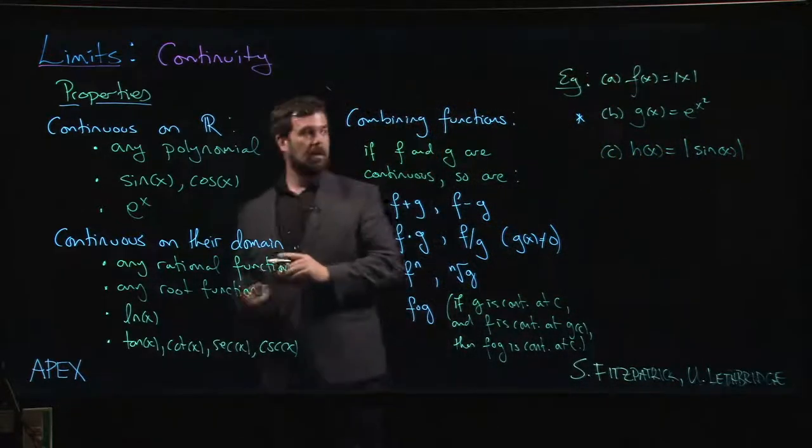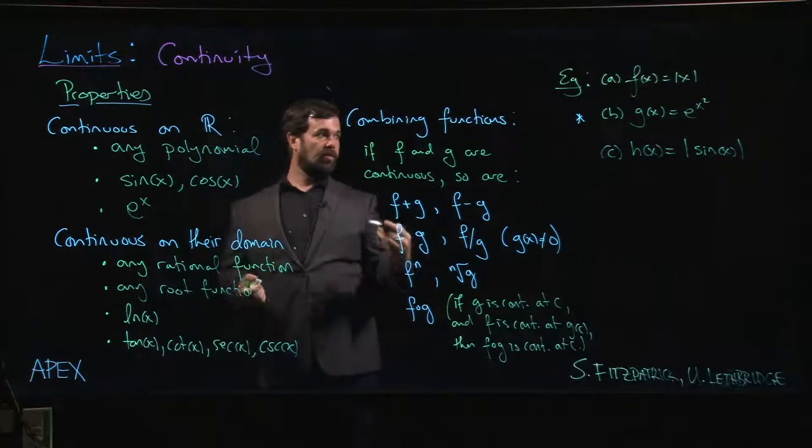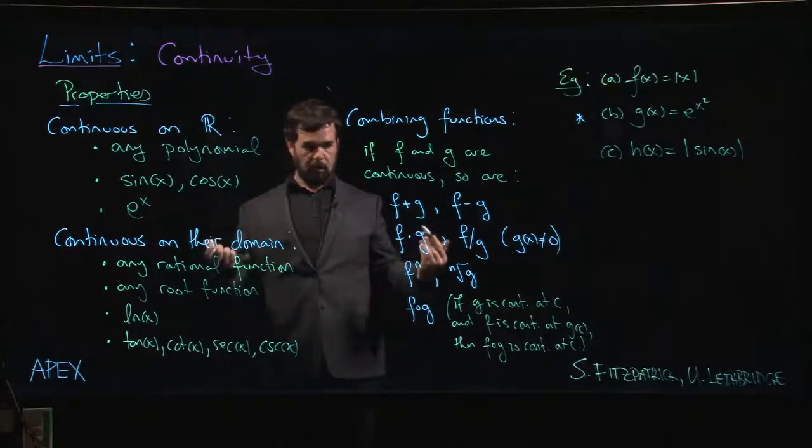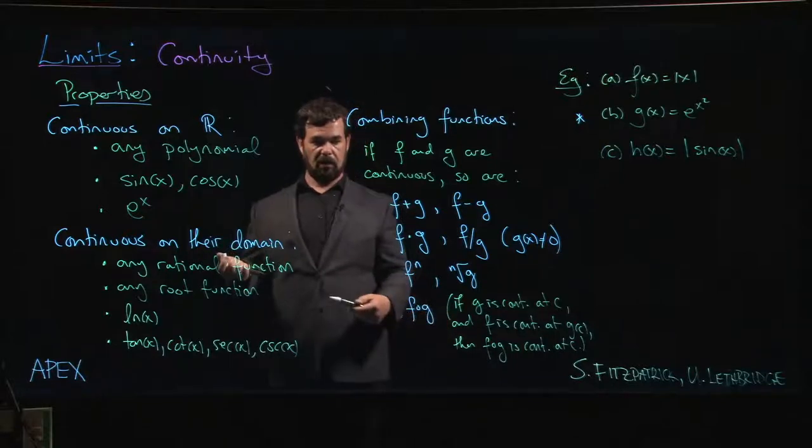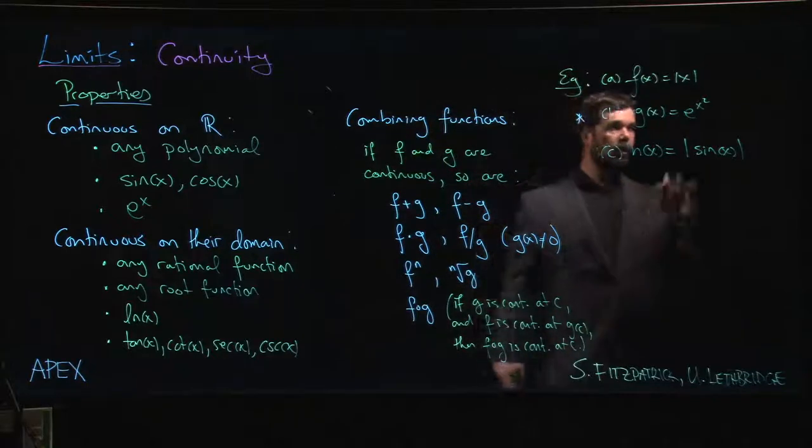Exponential functions are continuous everywhere. So g of x is a composition of two functions which are everywhere continuous, and we do have a theorem saying that the composition of continuous functions is continuous. So we know that this one is continuous everywhere.